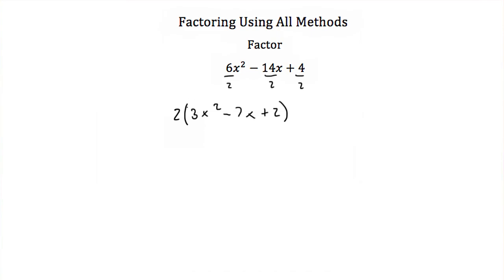Now I want to look for perfect squares or difference of squares. Well, 3x squared is not a perfect square and neither is 2, so difference of squares and perfect square trinomials are not going to work here. We don't have more than three terms, so we're not going to use factoring by grouping. So now we're stuck with binomial factoring.